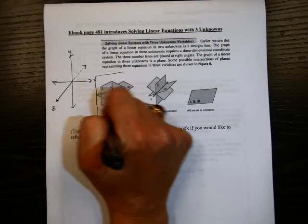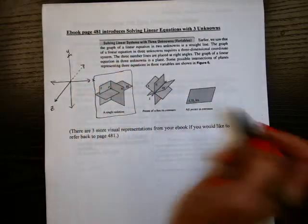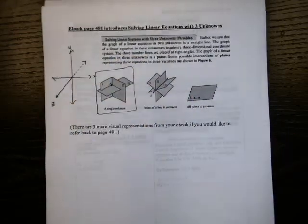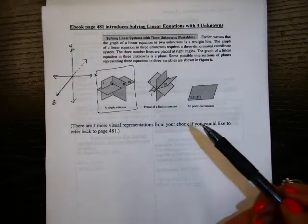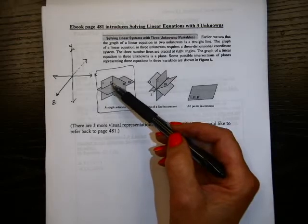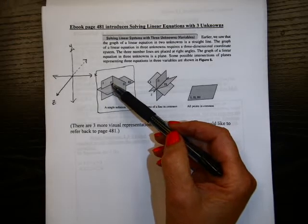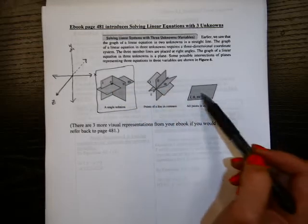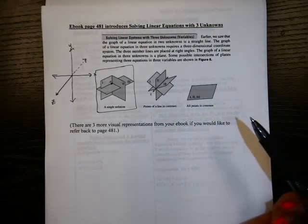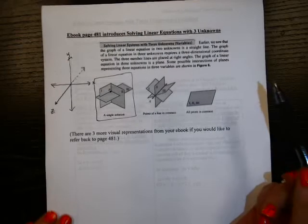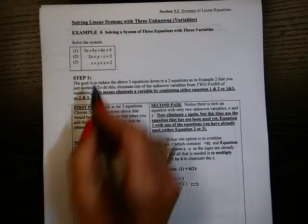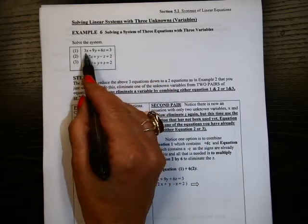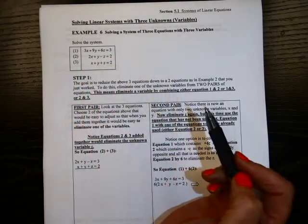So we are particularly going to study when three equations intersect at a point. Your book gives six visual representations. I just showed the first three where the system of three equations intersects in a point, or in a line, or they share all their points in common, or have all their points in common.